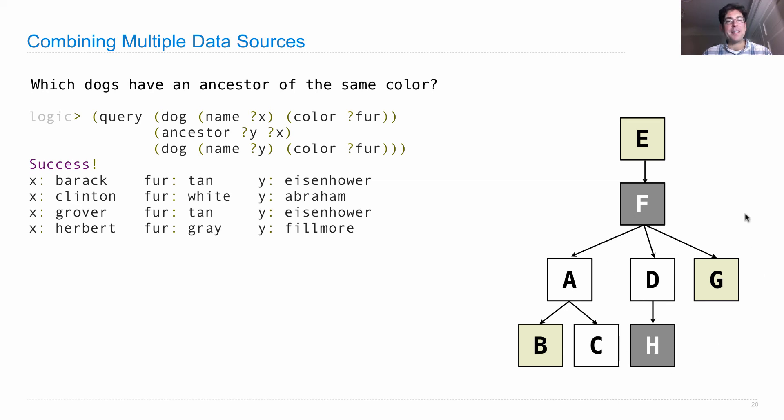Now, this is a pretty interesting relation because it's combining multiple data sources. I stated a bunch of facts about dogs and their names and their colors. I also stated a bunch of facts about parent relationships. I used a recursive fact to talk about ancestry. And putting all those things together, allowed me to figure out these relationships.